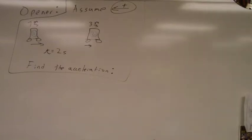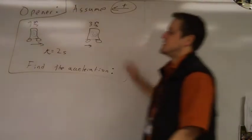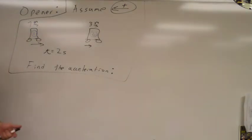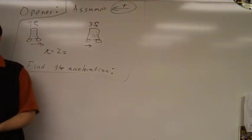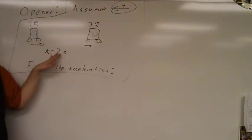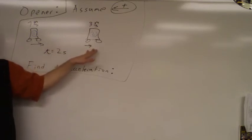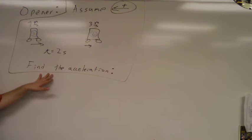All right, so the problem wouldn't normally have the picture like this done for you. What would it say? It would say a car is moving to the right at 7 meters per second. Two seconds later, it's moving at 3 meters per second, still to the right. And then it'll say find the acceleration.